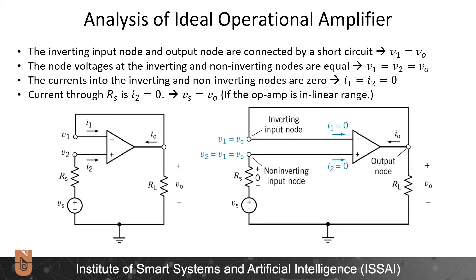Let's analyze an operational amplifier with feedback, meaning the output is connected back to the input. Here I have Vs and a resistor Rs. During normal operation, the current I2 into the non-inverting terminal is zero. If I2 is zero, then no current flows through Rs, so there is no voltage drop over it. Therefore, V2 equals Vs. In ideal operation, V1 equals V2, and therefore V1 also equals Vs.